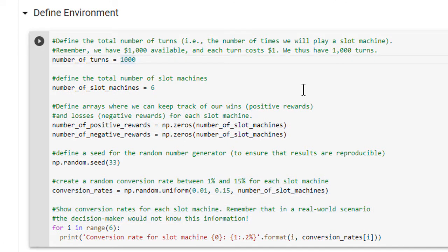Next, we'll define the environment. Defining the environment is a critical part of any reinforcement learning project. Here we begin by defining the total number of turns, that is, the number of times we will play a slot machine. Since we have $1,000 available, and since each turn costs $1, we have a total of 1,000 turns. Next, we define the total number of slot machines. In this scenario, there are 6 slot machines available.